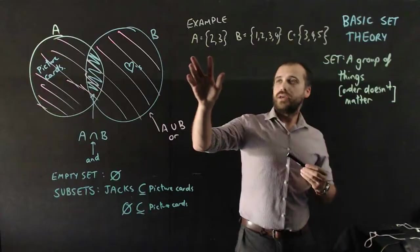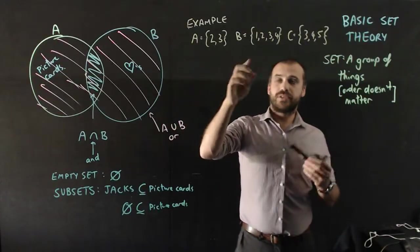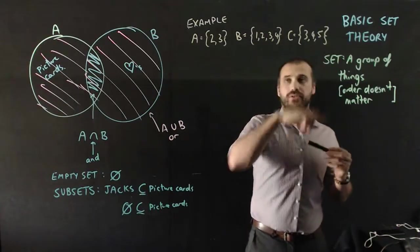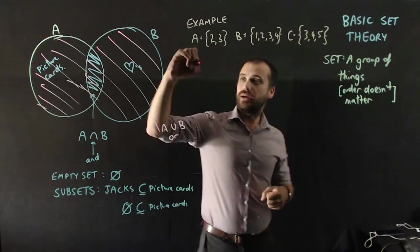I'm just going to do a little bit of work here. If we've got a set A: {2, 3}, and a set B: {1, 2, 3, 4}, and a set C: {3, 4, 5}, we can do things like B intersection C.